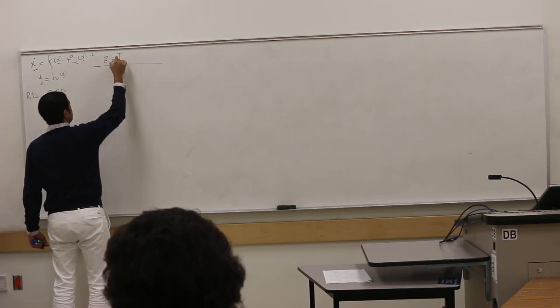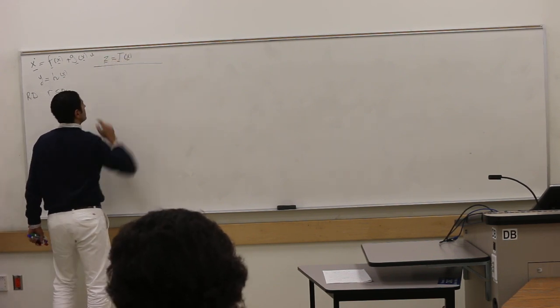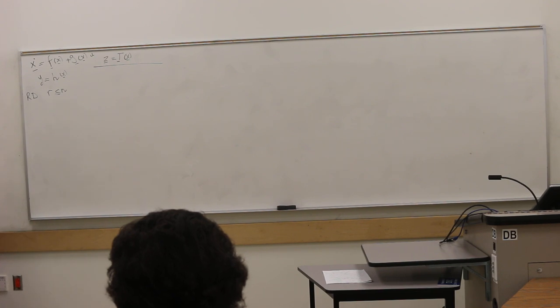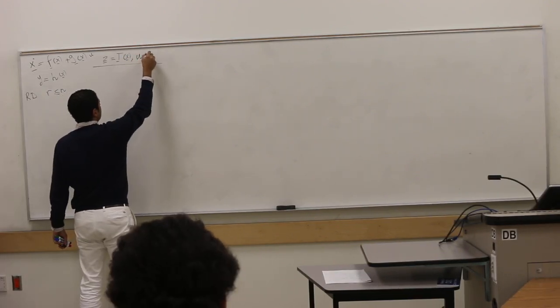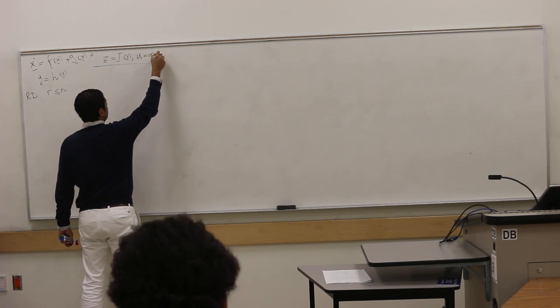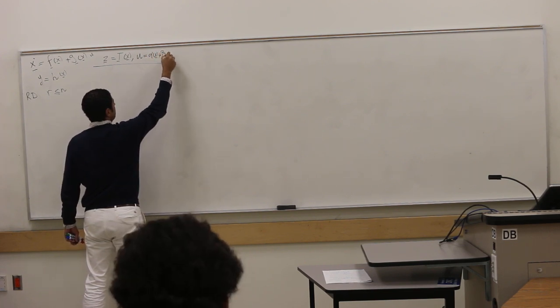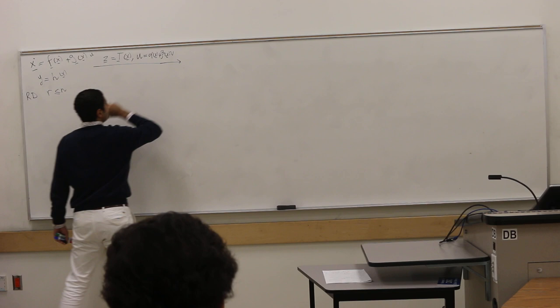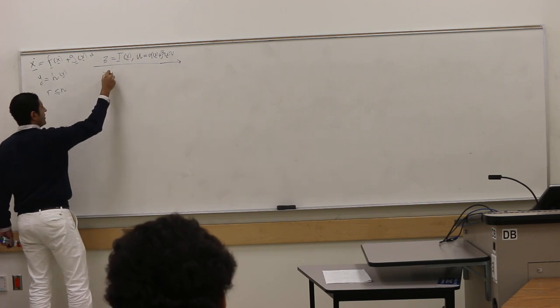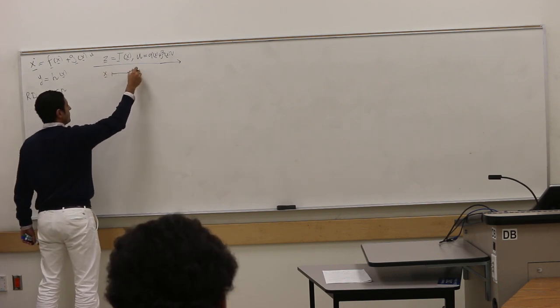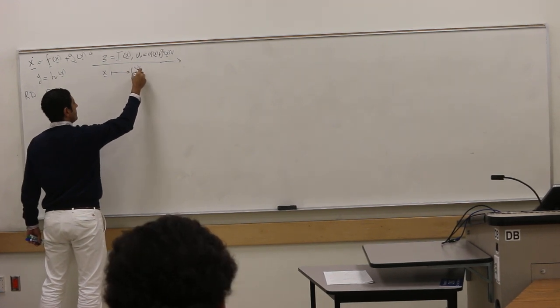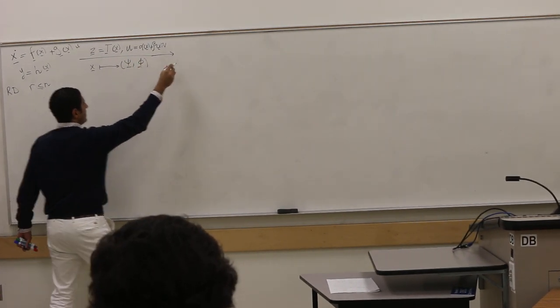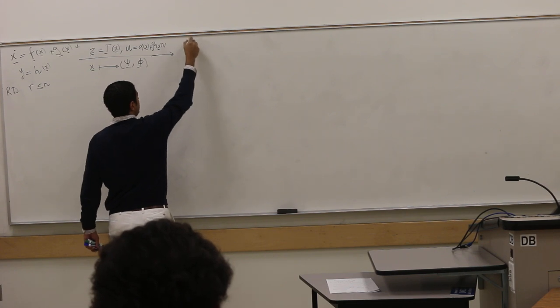If you want to reason, T is invertible and differentiable, and from the feedback form, U is alpha of X plus beta times V. Under this transformation, X will be mapped to two sets of variables, ψ and φ, such that the dynamics of the prime variable is purely linear.